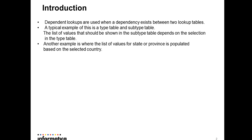A typical example is when there is a type table and a subtype table, and the value of the subtype table depends on the selection of the type table. Another example is the dependency between the state and the country column — the value selected for the country column should decide what states appear in the state column. This is the same example I am going to use in this demo.